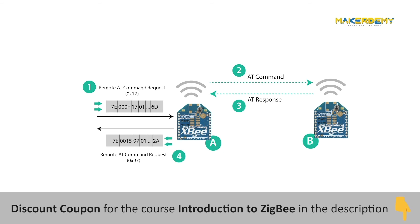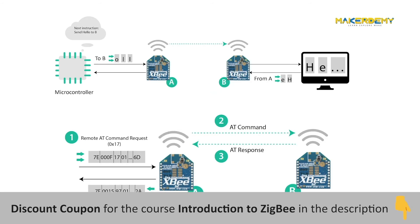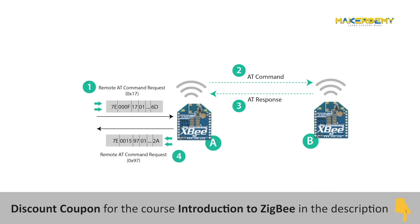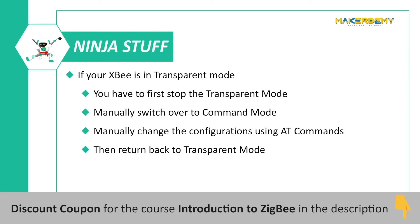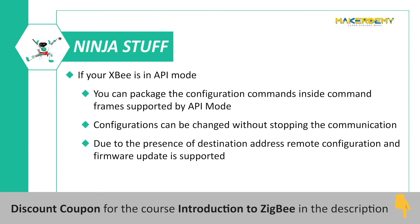Now let's discuss command mode. The reason I am explaining this at the end is to avoid confusion — in most online literature, people tend to club command mode together with transparent mode as if it is a feature of transparent mode, which is incorrect. Command mode is a separate mode in which incoming characters are interpreted as commands used to configure the different parameters of the module. If your XBee is in transparent mode, you must stop and switch to command mode to manually change configuration using AT commands. But if your XBee is using API mode, you can package commands inside special command frames, and configurations can be changed without affecting communication. As multi-hop is supported in API mode due to the presence of a destination address, we can even remotely configure faraway devices in the ZigBee network.